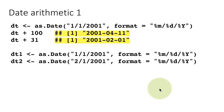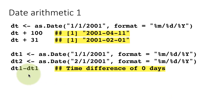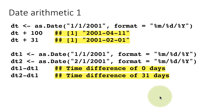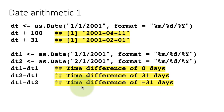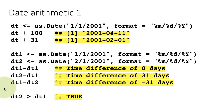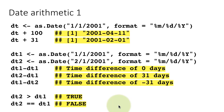We have two dates: dt1 = January 1, 2001 and dt2 = February 1, 2001. dt1 - dt1 is 0 days. dt2 - dt1 is a time difference of 31 days. dt1 - dt2 is -31 days because dt1 is before dt2. You can also compare dates: dt2 > dt1 returns TRUE, and dt2 == dt1 returns FALSE.